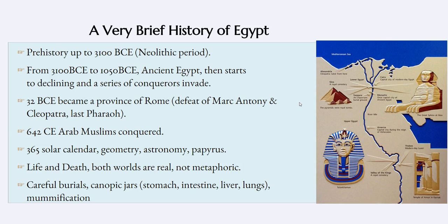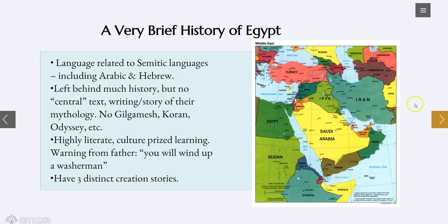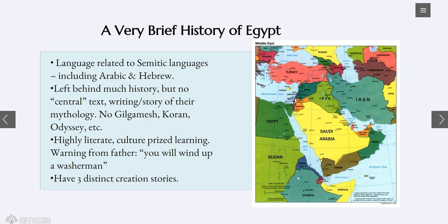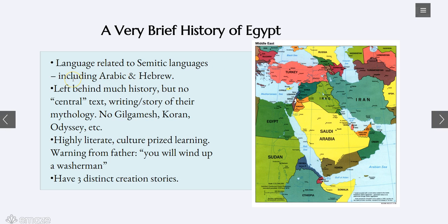We have New York City by the Hudson, Paris is around a river, London is around a river, etc. The Egyptian language is related to Semitic languages, which also includes Arabic and Hebrew. Looking at the map, you can see where Egypt is and how closely it is related to other societies — modern-day Israel, the Arab societies, going all the way back to Hammurabi and Gilgamesh. So no wonder why the languages are connected.